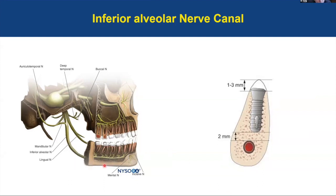If you're not sure when you see your x-ray about the position of the IAN, you must obtain a CBCT to find out the exact position of that canal before planning your implant. Remember that we must have at least 2 mm of distance between the implant and the canal.